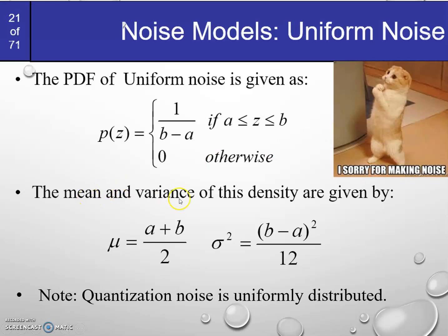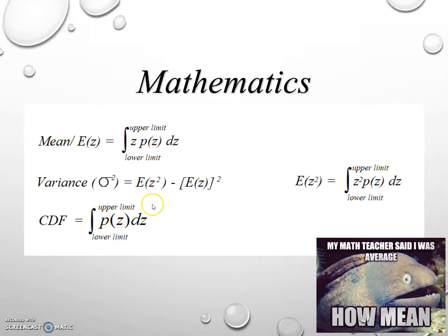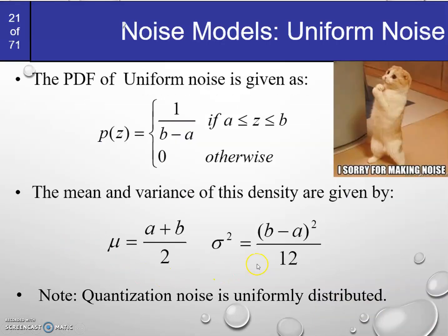The mean and variance of the uniform distribution are given by: mean = (a+b)/2 and variance = (b−a)²/12. These expressions are derived using the integral formulas discussed earlier. The step-by-step calculation is not included in this video, but a link in the description below shows how to calculate the mean and variance for uniform noise.